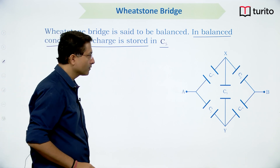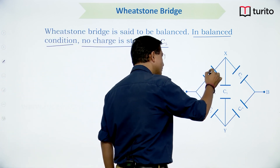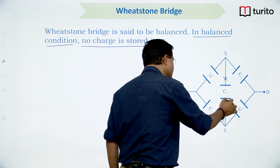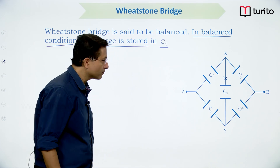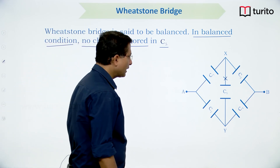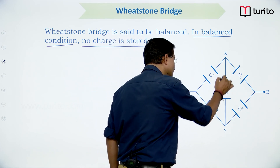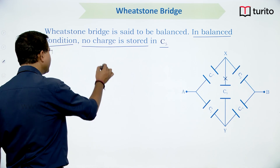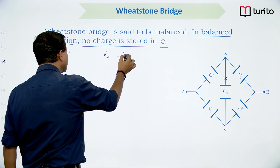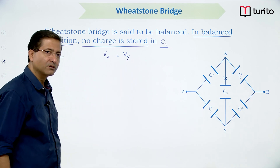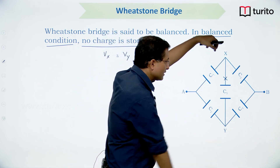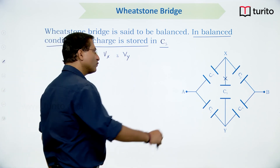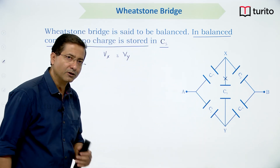To find the balance condition: there is no charge flowing through C5 if and only if the potential at junction x equals the potential at junction y. Since charge flows due to potential difference, if there is no potential difference across C5 there will be no charge flow.